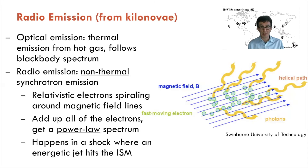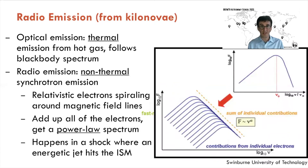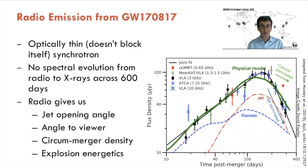Each one of these electrons gives a characteristic spectrum shown in the upper right inset. When you add up all of those electrons, you end up with a single power-law spectrum that is very typical of non-thermal synchrotron emission. This happens very often in a shock where an energetic jet hits the interstellar medium. And this is similar to what we see in the case of radio emission from the first gravitational wave double neutron star merger, GW 170817.